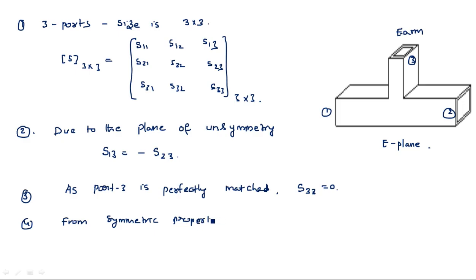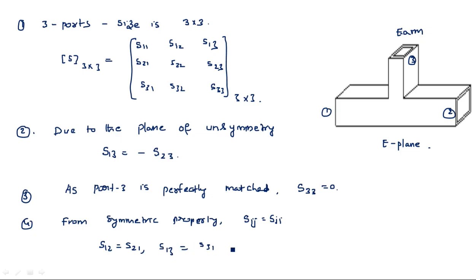Next, from the symmetry property, Sij = Sji. That means S12 = S21, S13 = S31, and S23 = S32.